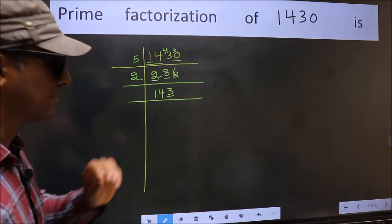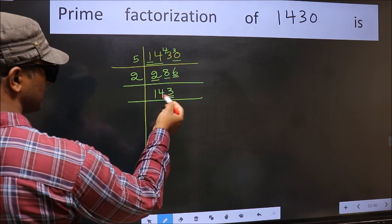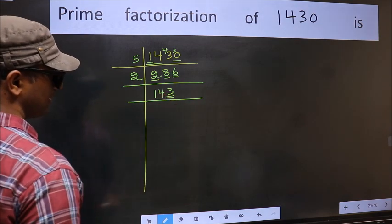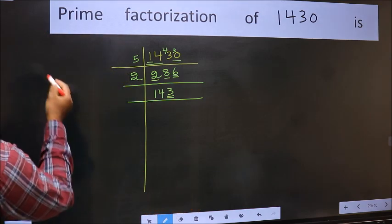Next prime number 5. The last digit is neither 0 nor 5, so this is not divisible by 5. Next prime number 7, let us check divisibility by 7 here.